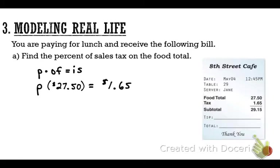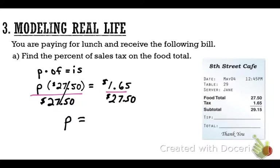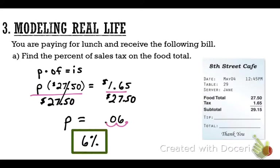Divide both sides by $27.50 to get P by itself. The answer is 0.06. The leading zero isn't needed. Since we're looking for percent, move the decimal point two places to the right. The answer is 6% — they had a 6% sales tax.